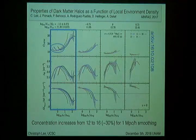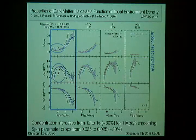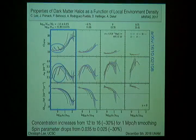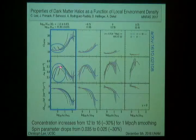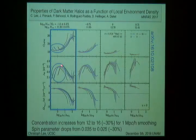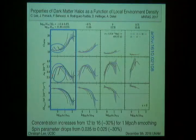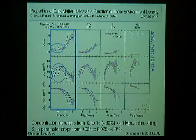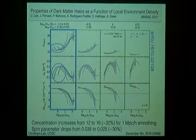Similarly, in the opposite direction, compared to approximately average or median density regions, when we get to low density regions these halos tend to have significantly lower spin parameters — again something like a 30 percent decrease.